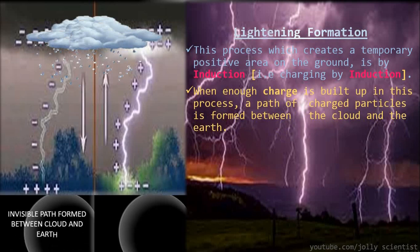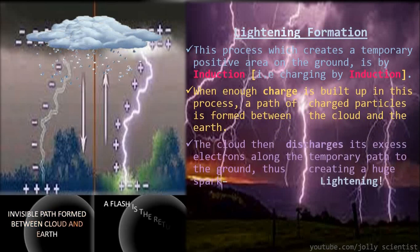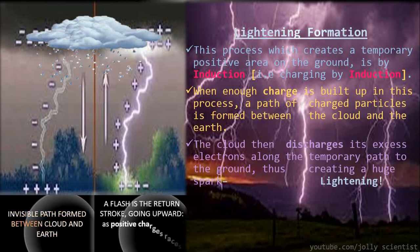You would see visible paths formed between the cloud and the Earth. The cloud discharges excess electrons along the temporary path to the ground, thus creating a huge spark. You would see that a flash returns stroke going upward, thus as the positive charge races towards the negative in the clouds. And that is your lightning.